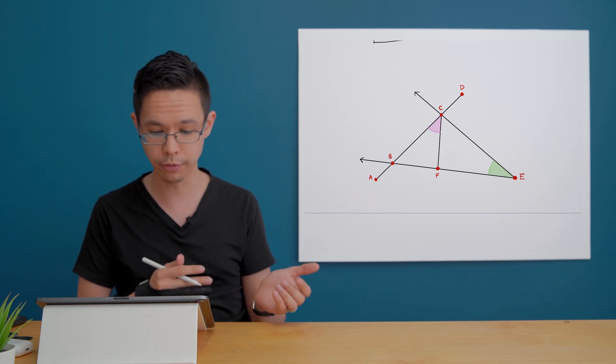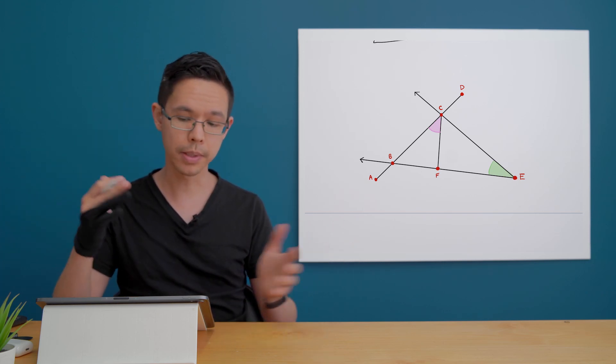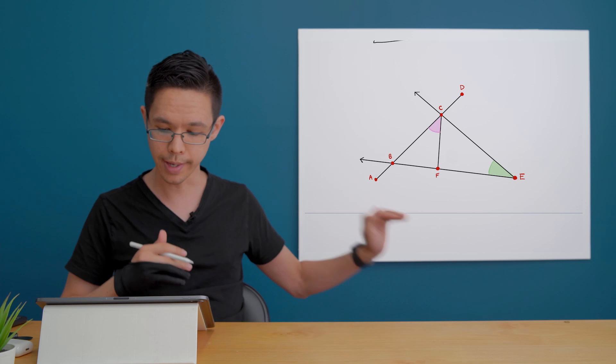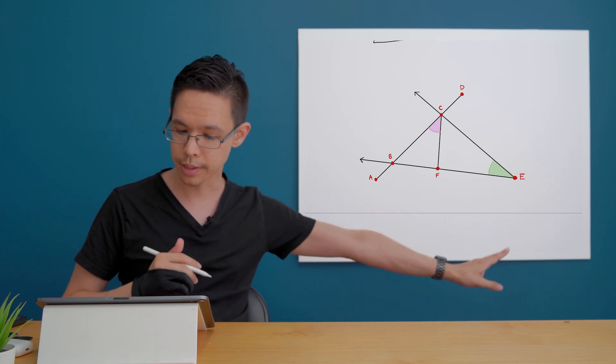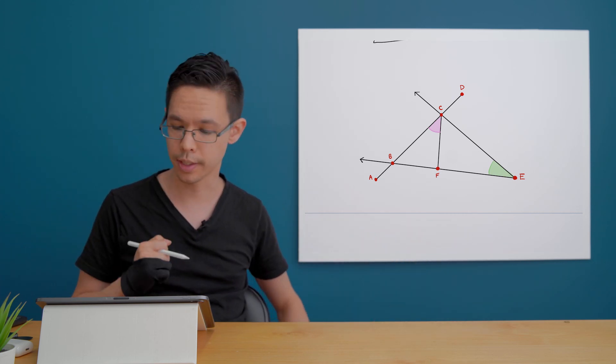Do we have any points? Yes, we do. We've got the points A, B, C, D, F, E on that side. So we definitely got a few points there in our diagram.